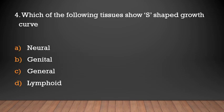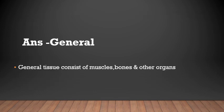Which of the following tissues shows an S-shaped growth curve? Neural, genital, general, or lymphoid. Answer: General. General tissue, which consists of muscles, bones, and other organs, shows an S-shaped growth curve.